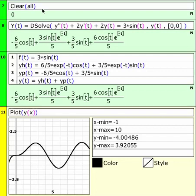Let's do another visual of a forced-damped harmonic oscillator, where we identify the forcing function, the yh, the yp, and the solution y.